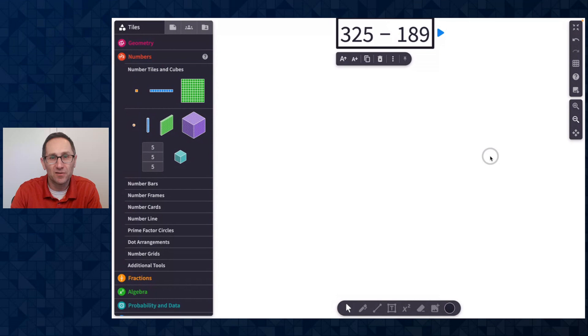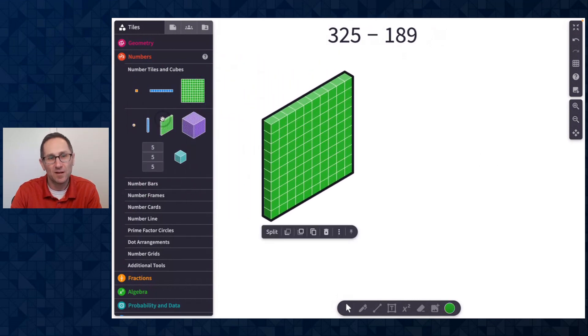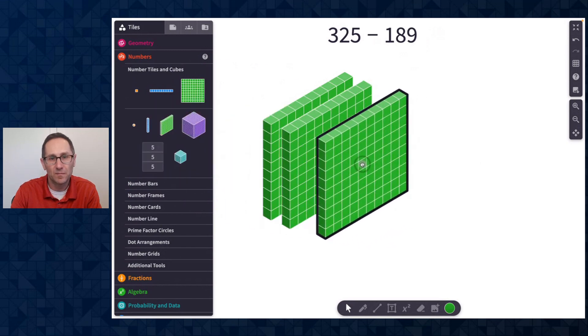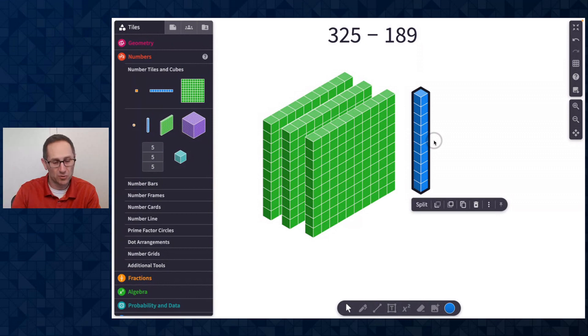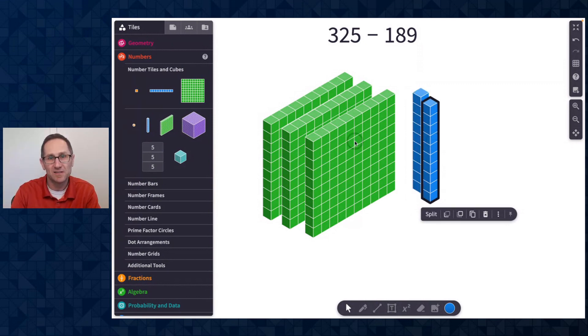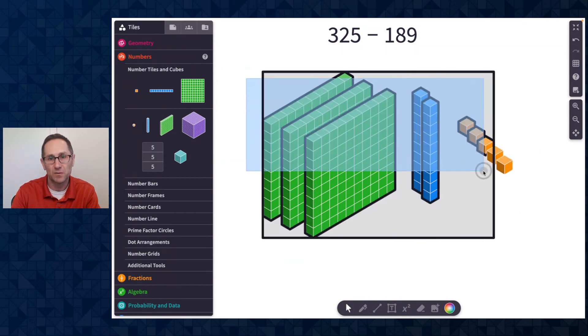So here we are. I'm first going to build 325. So here is the 100. I'll need three of those. So there's three of them. 20, here's a 10. A nice keyboard shortcut is the C button very easily makes a copy. So I just clicked C to make a copy of that. And then I'll do five of these. 1, 2, 3, 4, 5. There's 325.